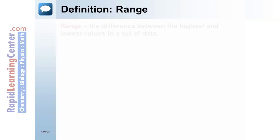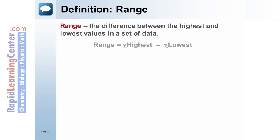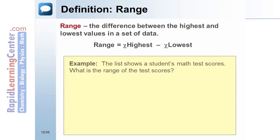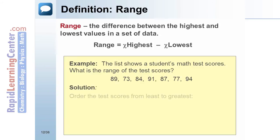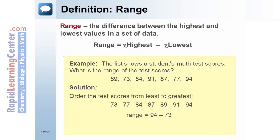Definition: Range. The range is the difference between the highest and lowest values in a set of data. Example: The list shows a student's math test scores: 89, 73, 84, 91, 87, 77, 94. What is the range of the test scores? Solution: Order the test scores from least to greatest: 73, 77, 84, 87, 89, 91, 94. Find the difference between the largest and smallest value in the set. The range of the test scores is 21.